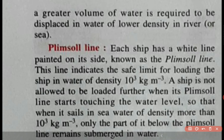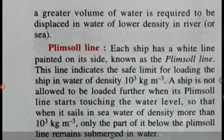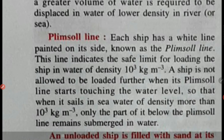This line indicates the safe limit for loading the ship in water of density 10³ kilograms per meter cube — this is pure water. A ship is not allowed to be loaded further when its Plimsoll line starts touching the water level, so that when it sails in sea water of density more than 10³ kilograms per meter cube, only the part of it below the Plimsoll line remains submerged. The Plimsoll line is there to indicate the amount of loading to be done in the ship.